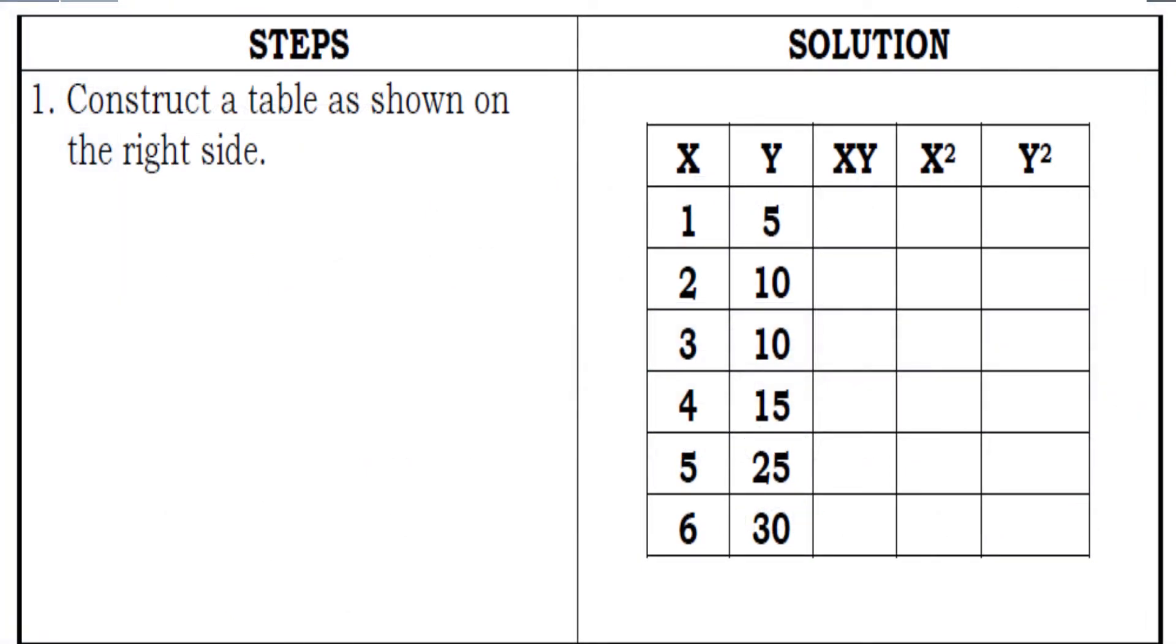The first one is to construct a table as shown on the right. We're going to construct the table vertically, and we must add additional columns for xy, x squared, and y squared.